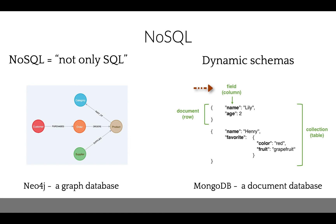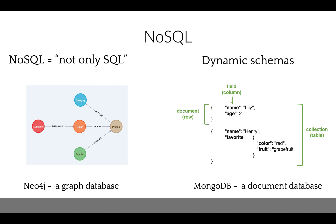Neo4j is a Java-based open-source NoSQL graph database. Unlike traditional databases, it has a flexible structure defined by stored relationships between data records. Each data record is a node and stores direct pointers to all the nodes it is connected to, called edges. With a graph database, you can search social network data — for example, you can explore connections between people, organizations, or transactions.